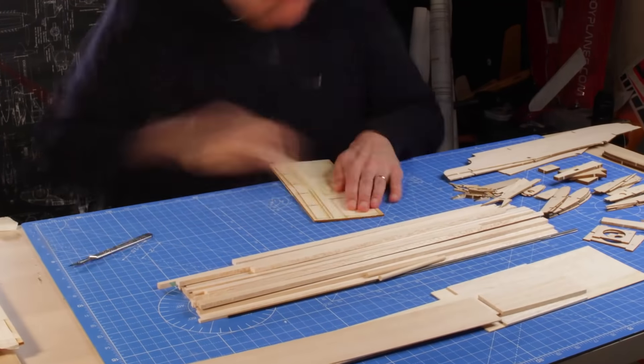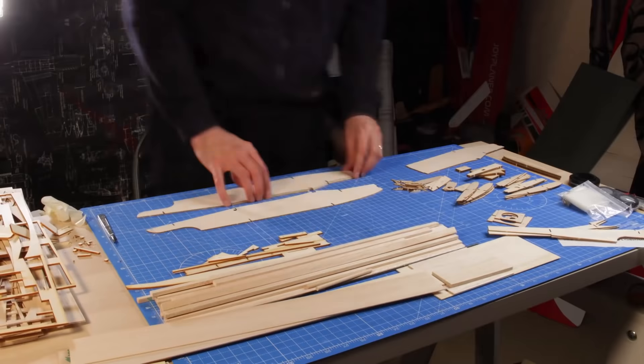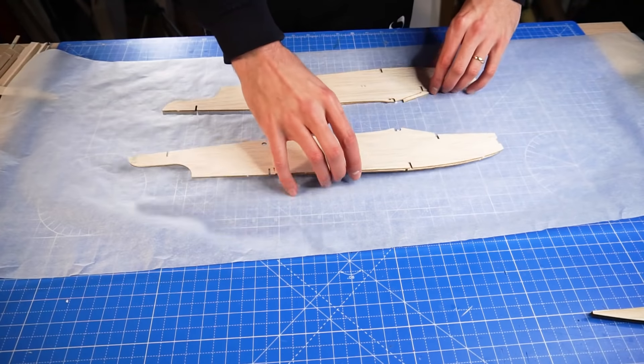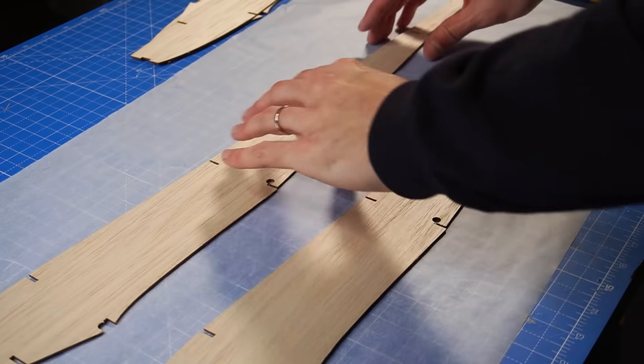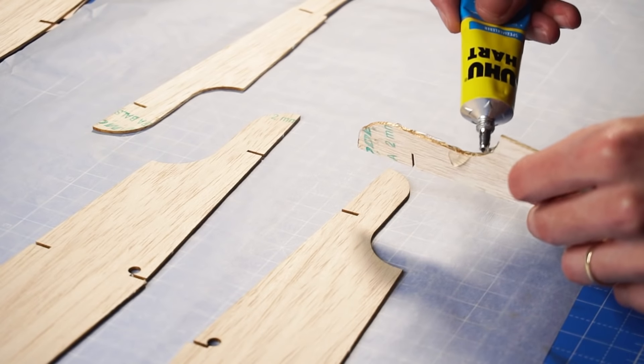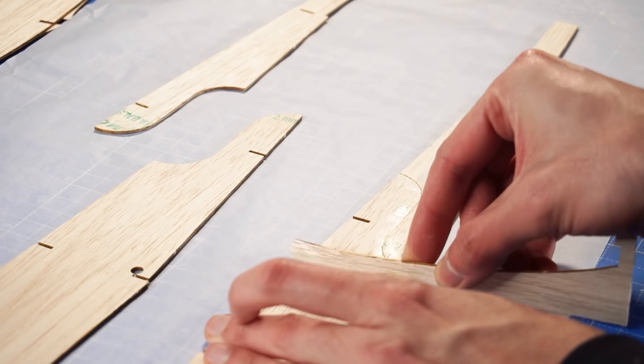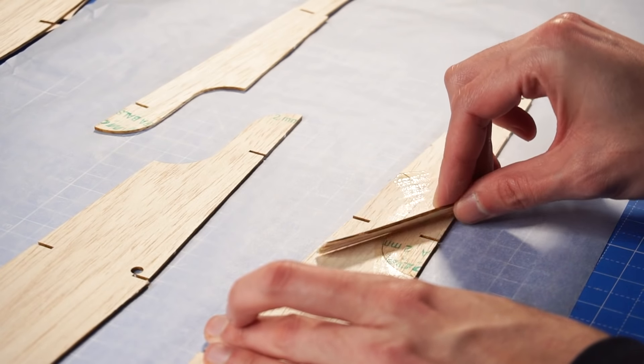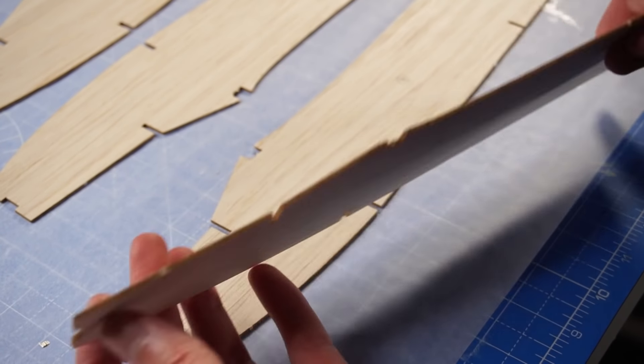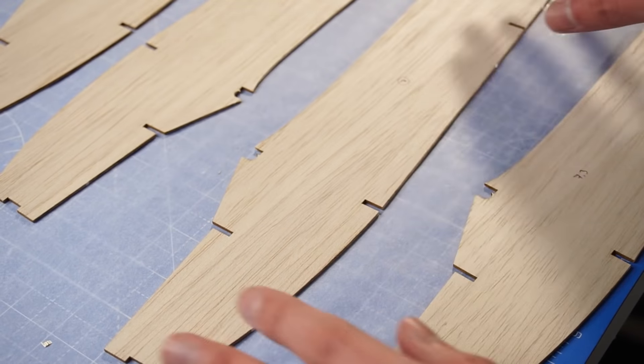Let's start by taking out all of the pieces from the balsa wood and the plywood, and then we're going to need a very flat surface and some baking paper or transparent plastic. The building process starts with the fuselage. Make sure to lay down these pieces like a mirror, one of them has to be the mirror image of the other.